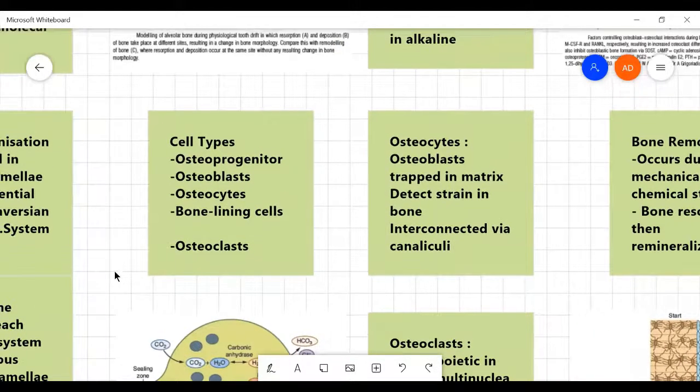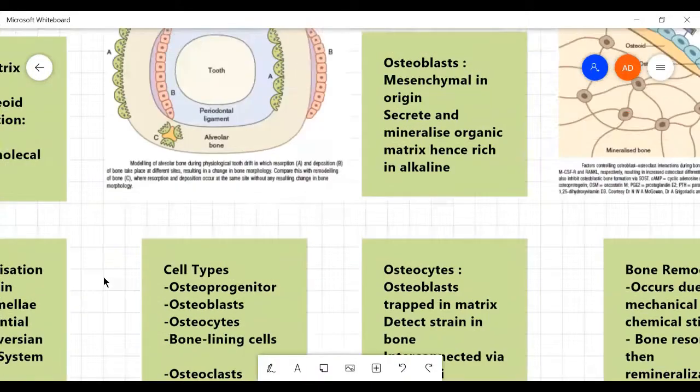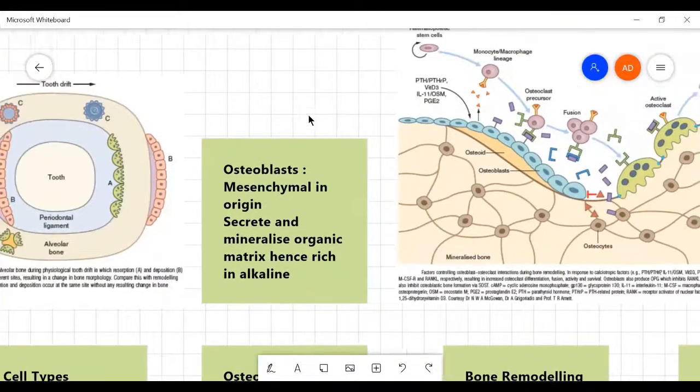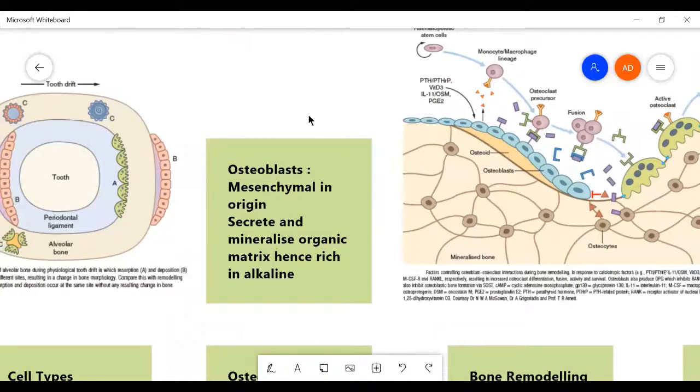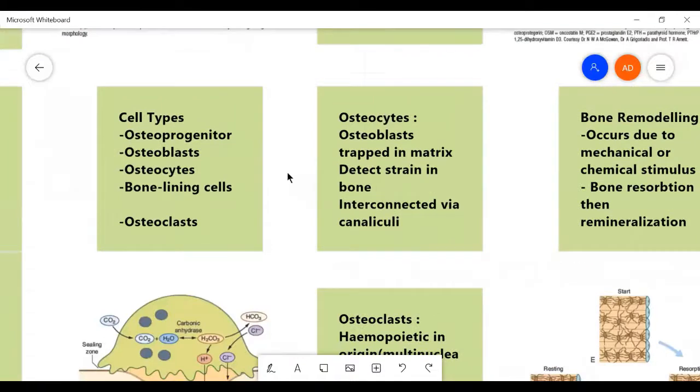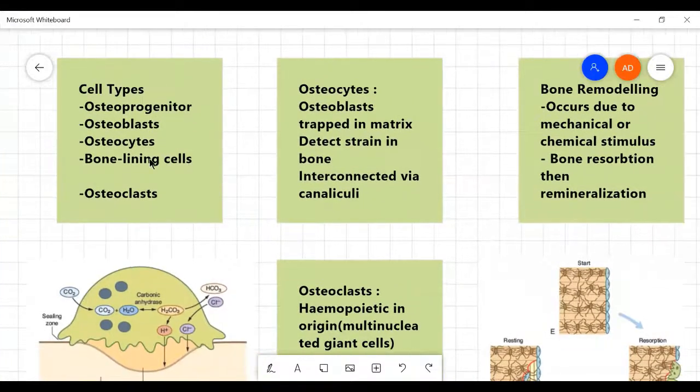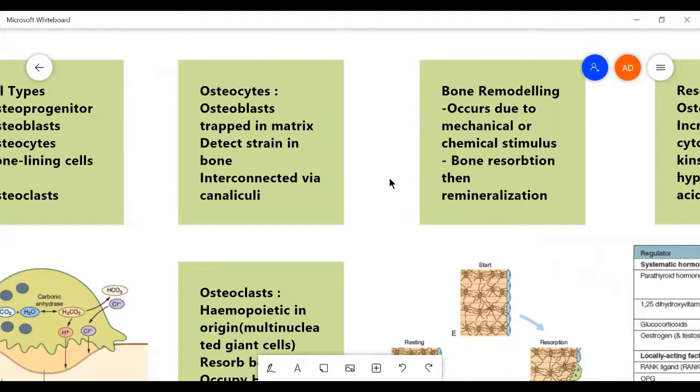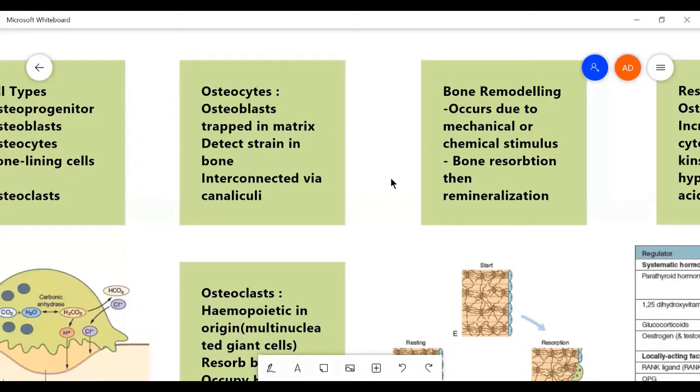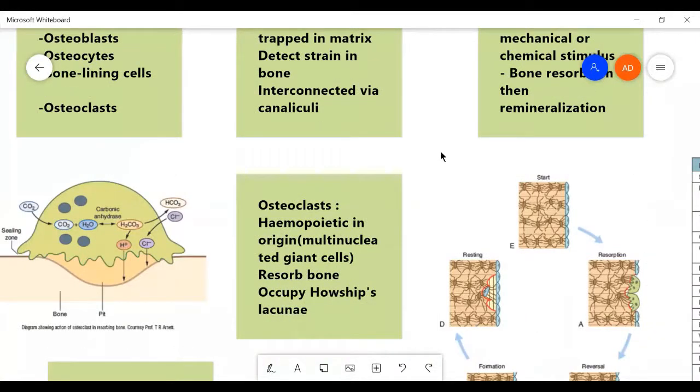Osteoblasts are basically mesenchymal in origin. They secrete and mineralize organic matrix. They are rich in alkaline phosphatase. Osteocytes are the trapped osteoblasts. They occupy the spaces in the bone matrix. And they are connected via the canaliculi.